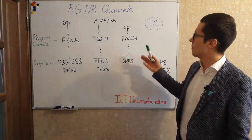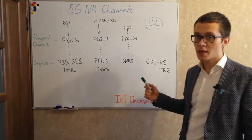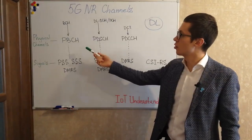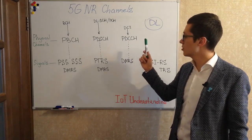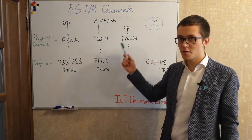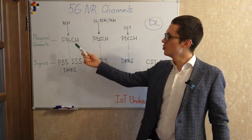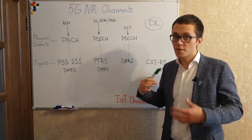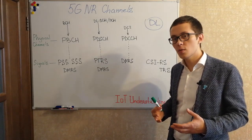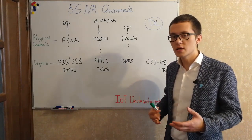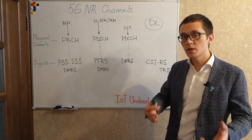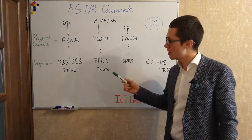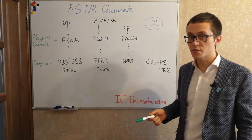Let's take a look at NR channels for the downlink direction. As you may see, there are some similar channels as in LTE. We have broadcast channel, shared channel, and control channel for downlink. But apart from this we have lots of new signals, and that's primarily because 5G is going to be deployed in millimeter waves and C-band. That's why we need so many new signals to support these frequencies.